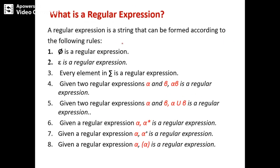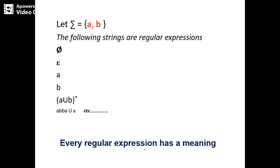A regular expression can be formed according to the following rules. Null is a regular expression — the language contains no strings. An empty string is also a regular expression. Every element in the alphabet, a single character, can also be a regular expression. The concatenation of alpha and beta is a regular expression. Alpha union beta is also a regular expression. Alpha-star, meaning zero or more occurrences of alpha, is a regular expression. Alpha-plus, meaning one or more occurrences, is also a regular expression. And a parenthesized alpha is also a regular expression.